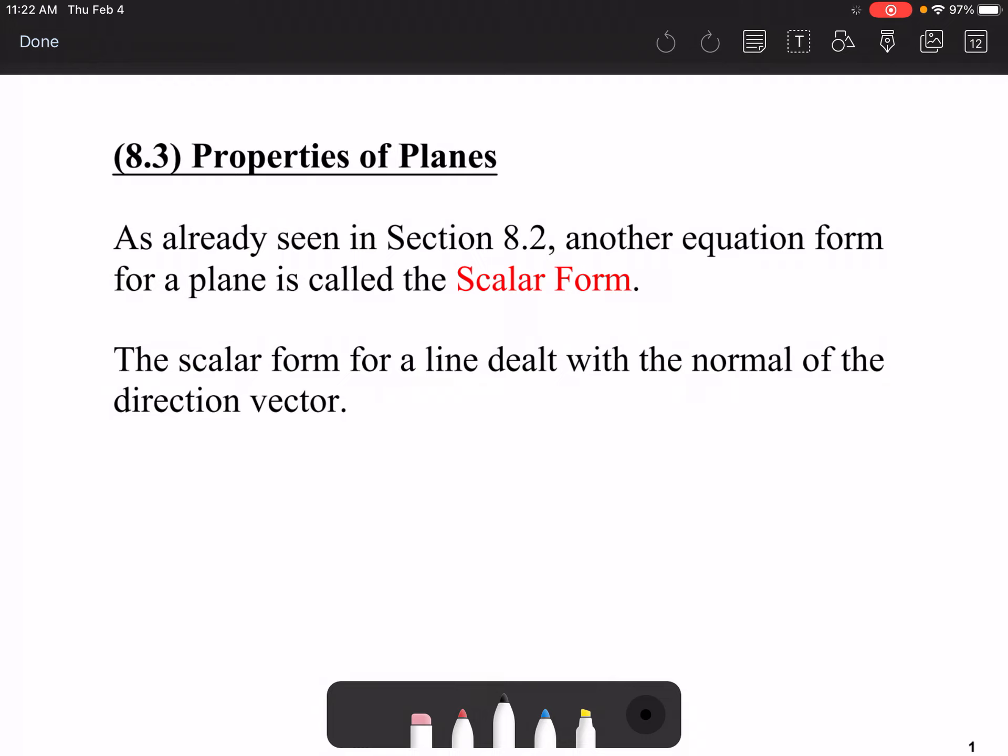Scalar form deals with the normal of the directional vector. So let's first draw a little example of what I mean here. I'm going to draw a sheet of paper as an example of a plane. So let's say this plane has directional vector A inside of it. And in order for it to be a plane,